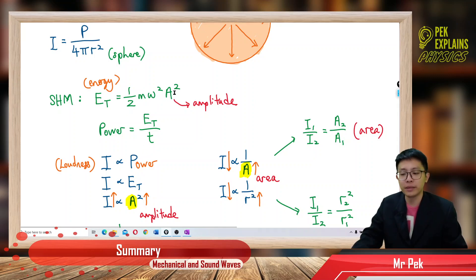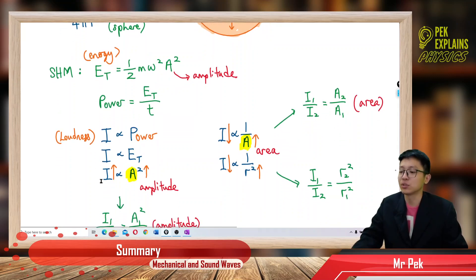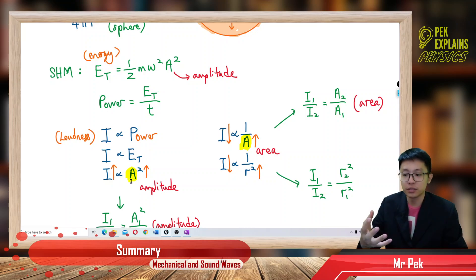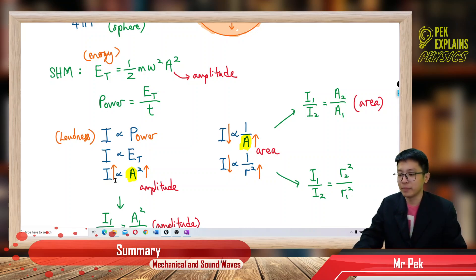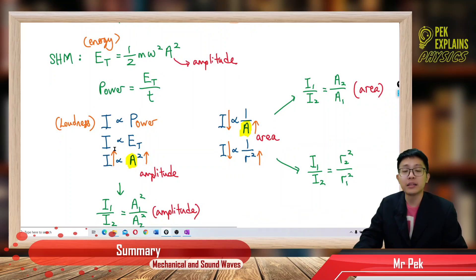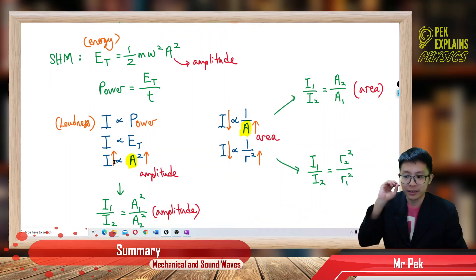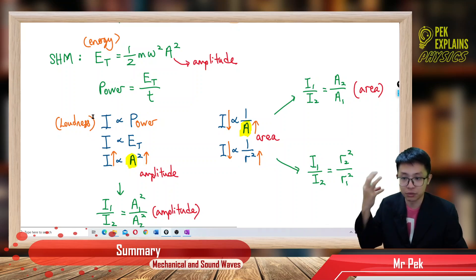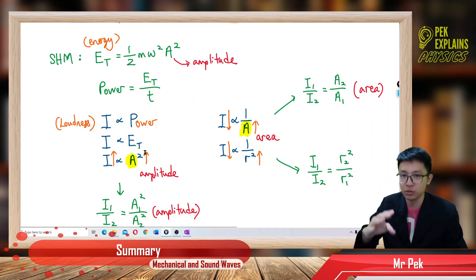Total energy can be represented by amplitude squared. So intensity is proportional to amplitude squared. That means the higher the intensity of sound — or the higher the loudness of sound you hear — the higher the amplitude of the sound wave you are hearing.